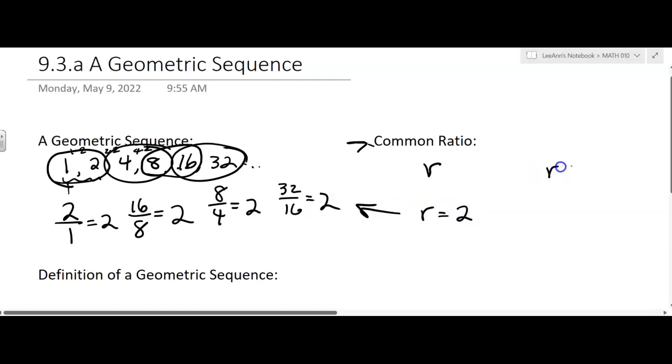Now, R can be negative. And R can be a fraction. I should say a rational number. It could be a decimal too. It can be a rational number, like a fraction or a decimal.